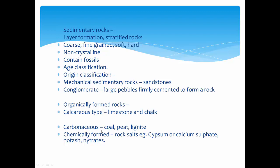Carbonaceous rocks are formed generally from plants: when plants die, they form coal, peat, and lignite due to heat and pressure inside the Earth's crust. Chemically formed sedimentary rocks include rock salts — for example, gypsum (used in plaster of Paris, formula CaSO4), potash (K2SO4), and nitrates. These are sedimentary rocks formed chemically, dissolved and deposited in sea beds.